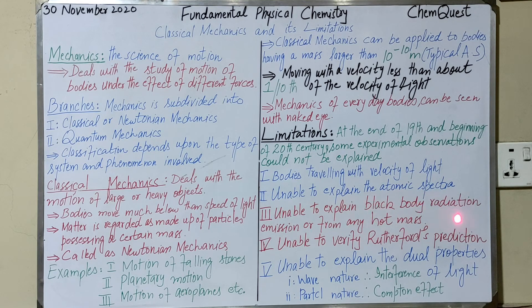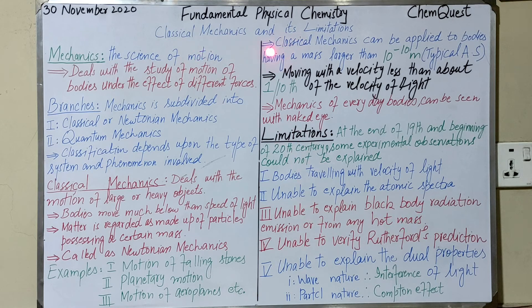The third limitation: classical mechanics is not able to explain black body radiation — the radiation emitted from any hot mass. Black body radiation and its properties, which were discussed in the previous lecture in detail, cannot be explained by classical mechanics.